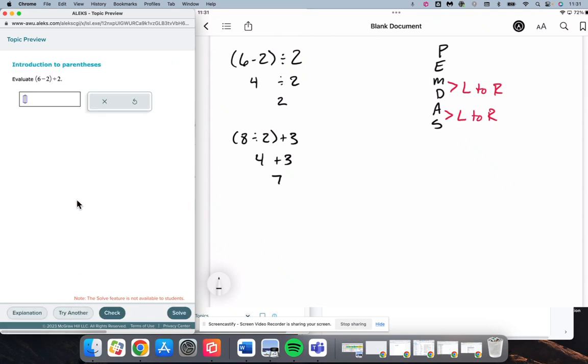And we'll do a couple more. 6 minus 2 inside parentheses. Divided by 2.